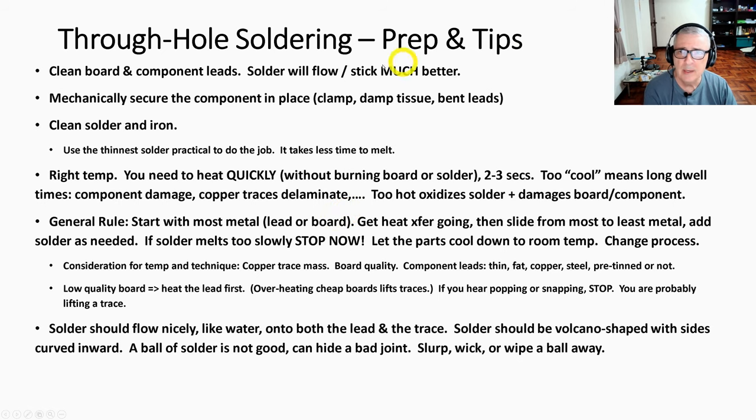Some prep and tips: You need to clean the board you're going to be soldering and clean the component leads. That's something you don't see a lot—people kind of neglect this. If those two things are clean, the solder is going to flow and stick much better. You're going to get a much more beautiful, reliable joint. You need to mechanically secure the component in place—clamp it, use a damp tissue, bent leads, whatever works. One important reason is that after you're done soldering and removing the iron, you do not want the component to wiggle because you can get a cold joint. You want that solder to cool and harden without being wiggled or moved.